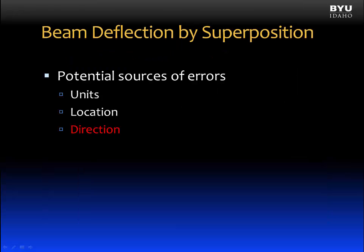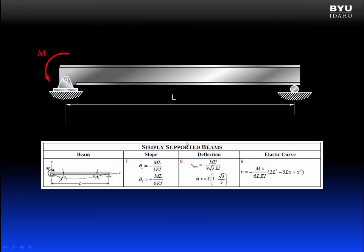The third potential source of error has to do with the direction of the deflection. For example, consider this beam with a concentrated moment applied at the left end. If we go to the deflection tables to find our equations for deflection, we will find this beam shown here. And notice that the moment on this beam is in the opposite direction to the moment that we have in our problem. Well, that's no big deal. The way we will handle this is by putting a negative sign on the moments in each of our equations.